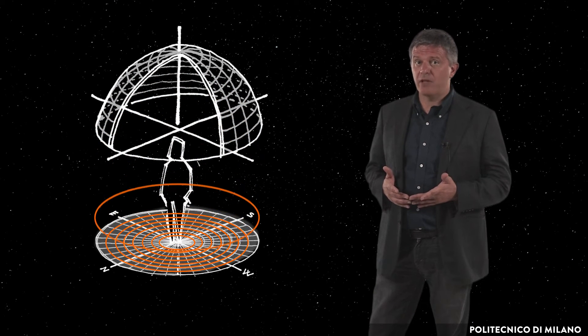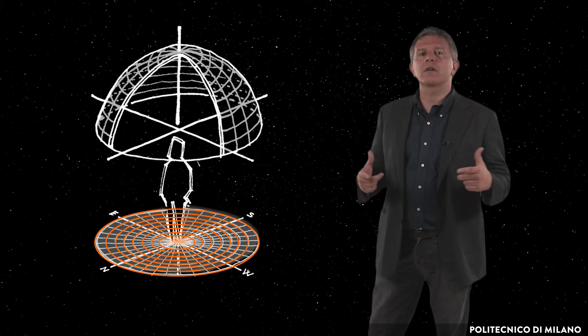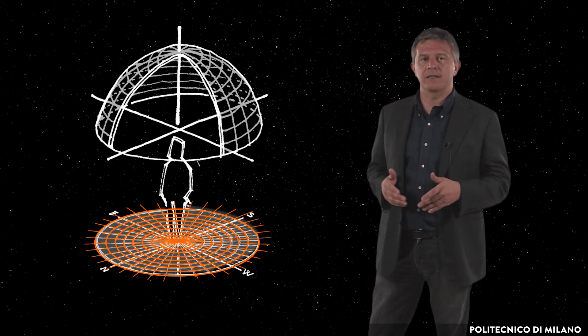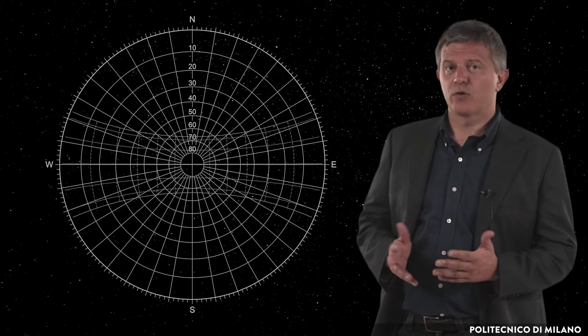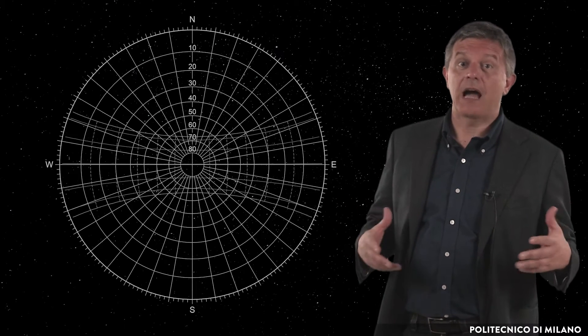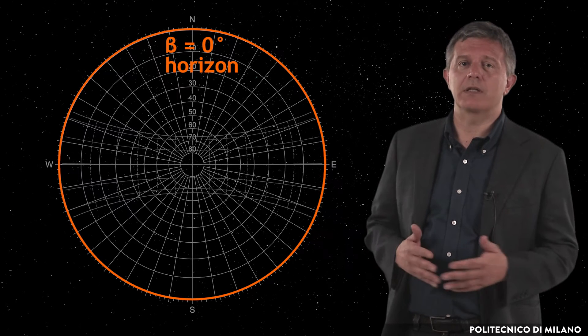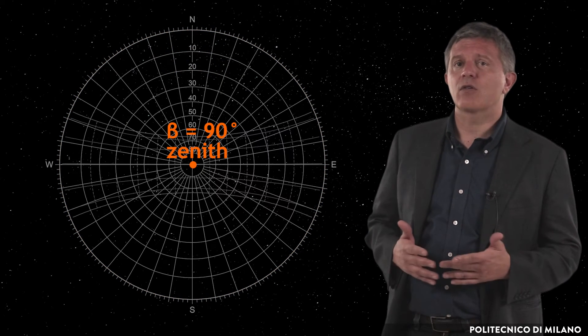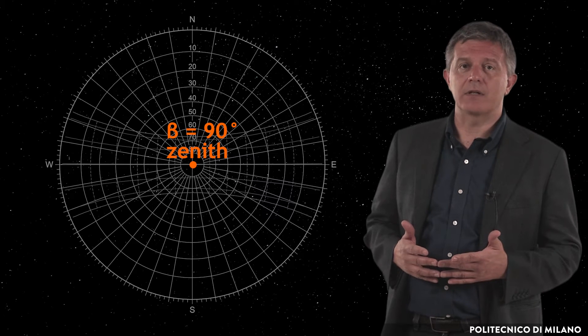The base of each polar diagram is represented by a series of concentric circles and radial lines. The values of solar altitude beta are represented by the circumferences. The outermost one corresponds to beta equal to zero degrees, while the center corresponds to beta equal to 90 degrees.